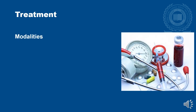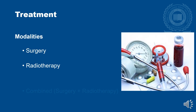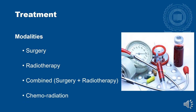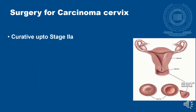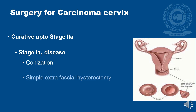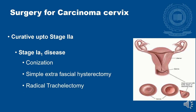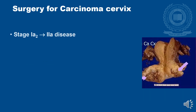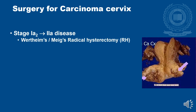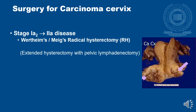Treatment modalities available are surgery, radiotherapy, combined surgery and radiotherapy, and chemoradiation. Surgery can be curative up to Stage 2a. In Stage 1a1, options include conization, simple extrafascial hysterectomy, or radical trachelectomy. Conization removes a cone of the cervix and serves as both diagnostic and therapeutic modality. In extrafascial hysterectomy, the uterus and cervix are removed. In radical trachelectomy, the whole cervix along with the parametrium is removed. From Stage 1a2 to Stage 2a, the surgery is radical hysterectomy — Wertheim's or Meigs type — with pelvic lymphadenectomy.